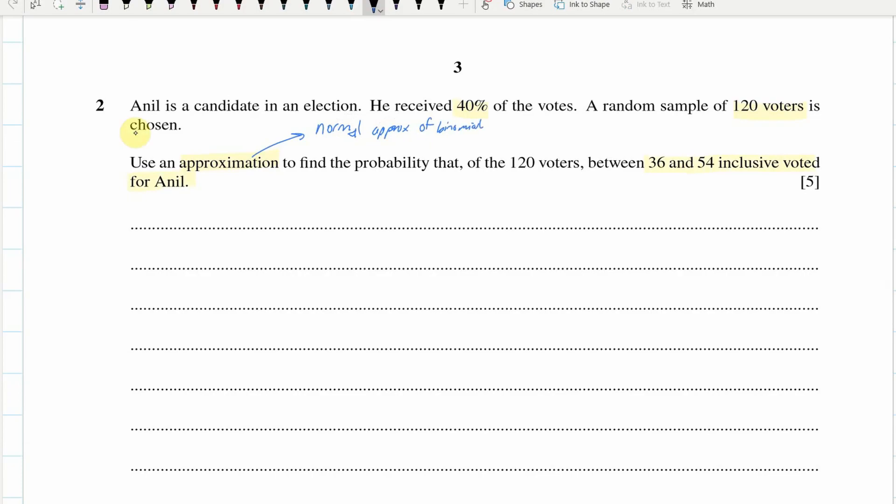So what I'll probably do to start this off is I'll write as a binomial. We've got 120 trials, and the chance of success is 0.4 or 40%. Now, I'm going to move that into a normal distribution. 120 times 0.4 is 48. So 48 is our mean. And then I'm going to times 48 by 0.6, which is Q. P and Q add to 1. So that gives me 28.8, and that's my variance.